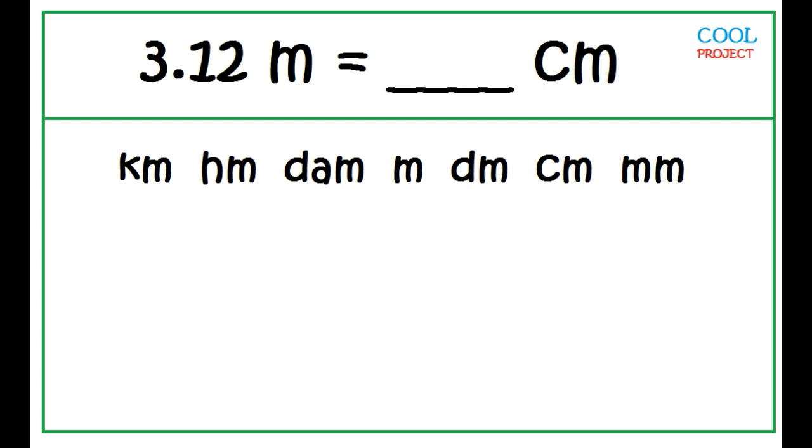Convert 3.12 meters to centimeters. Count the number of units from meter to centimeters: 1, 2. Two units to the right.